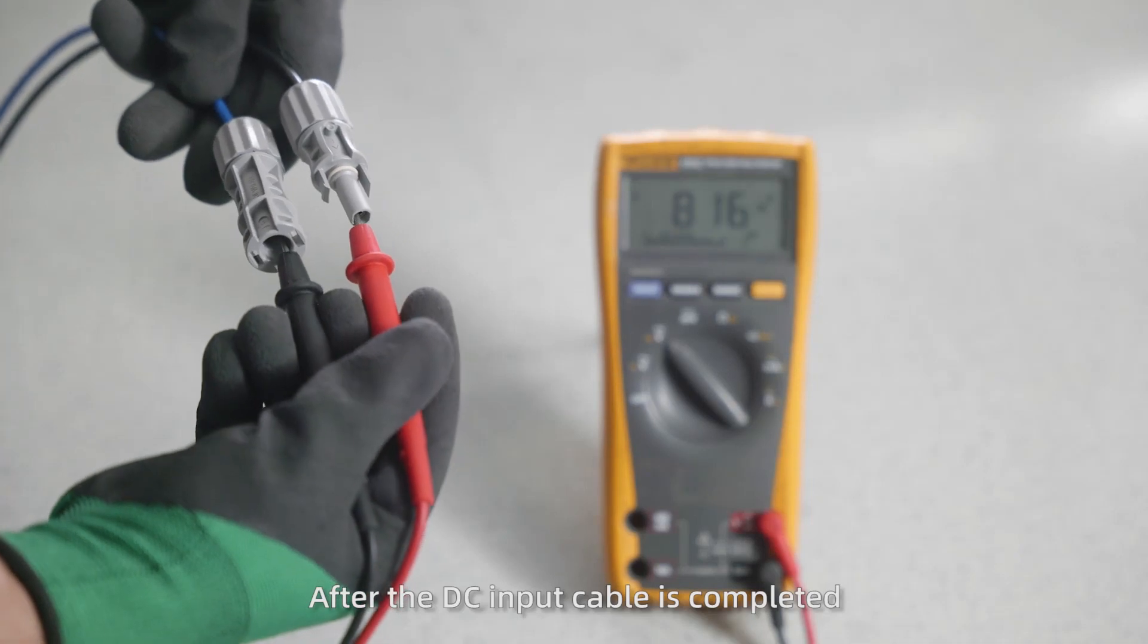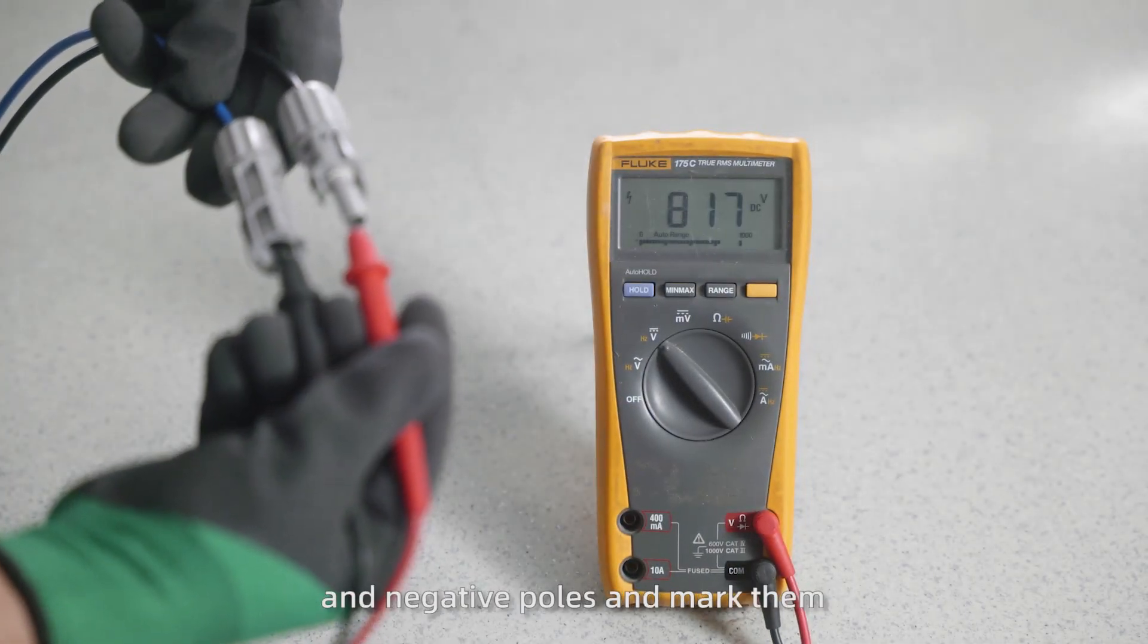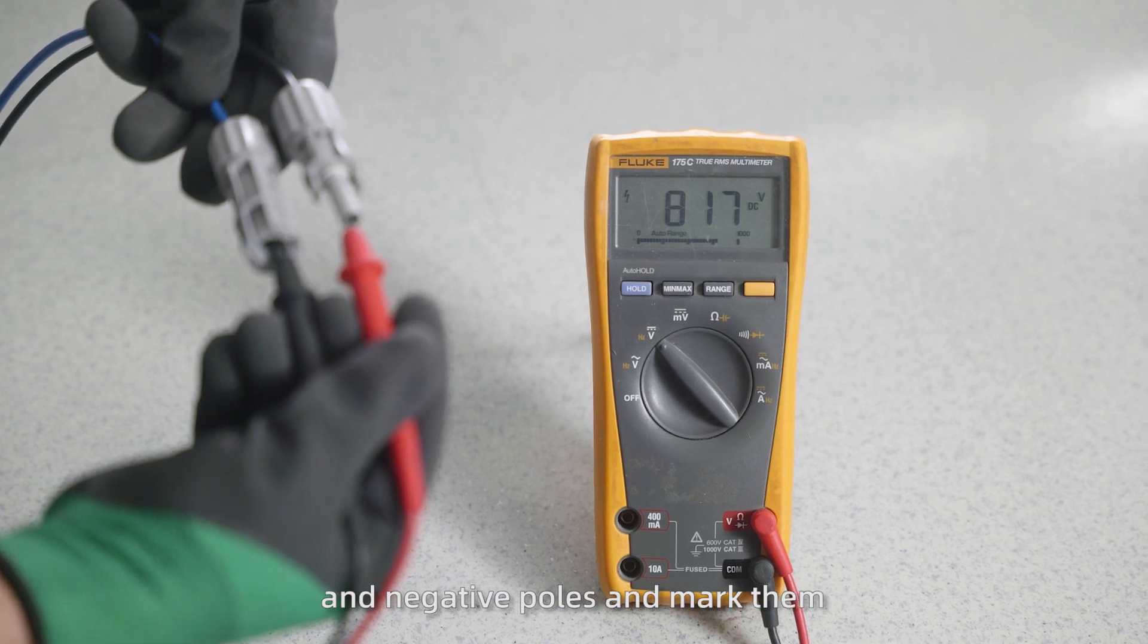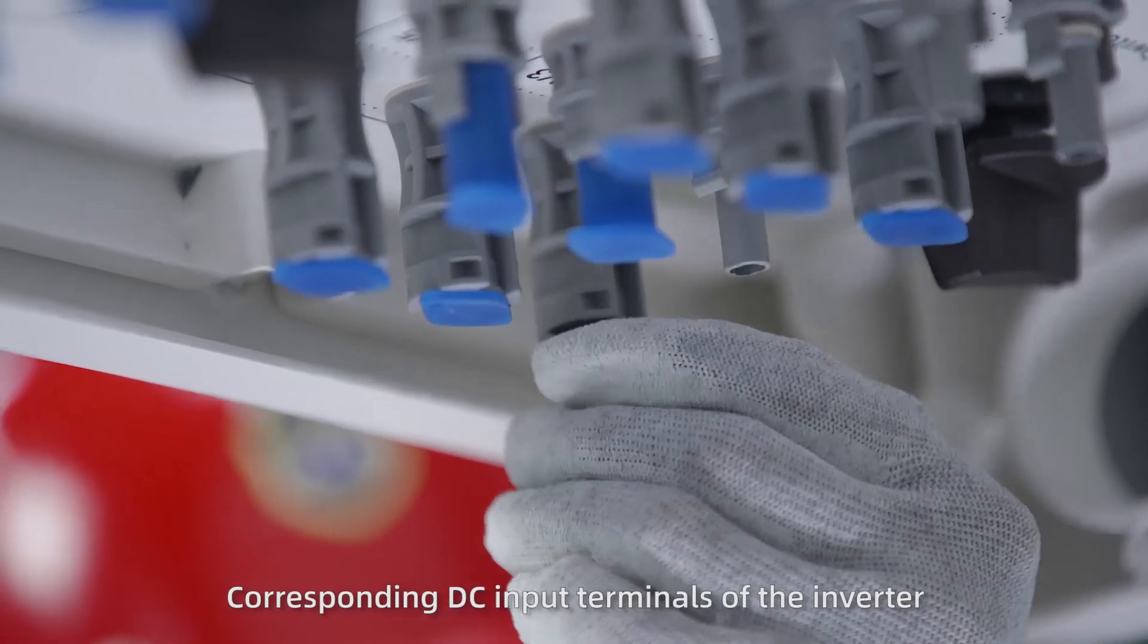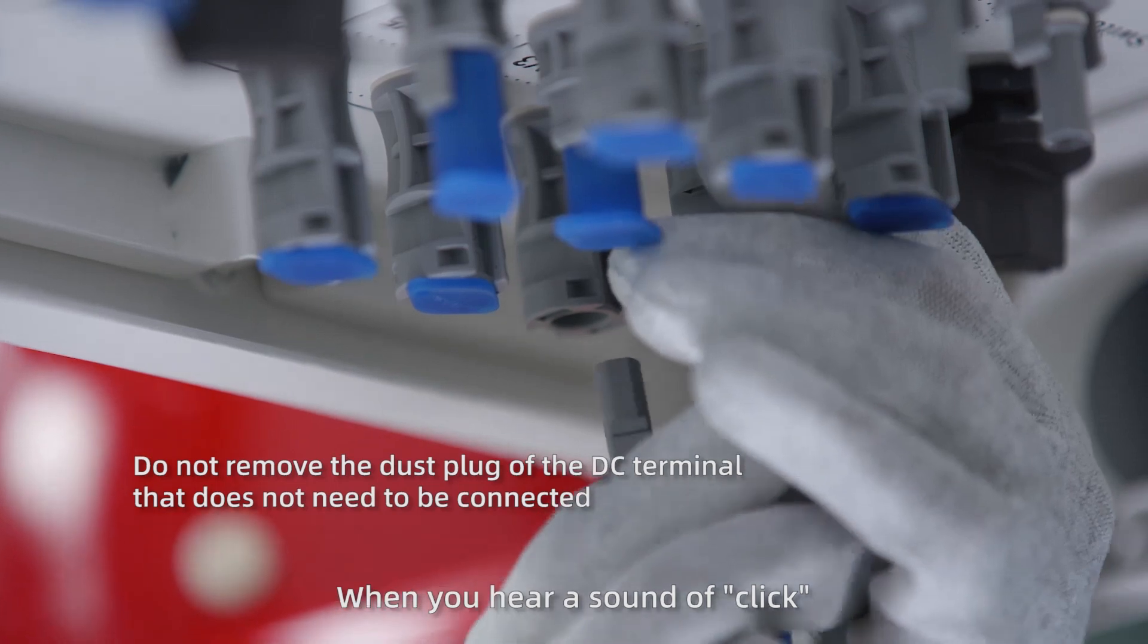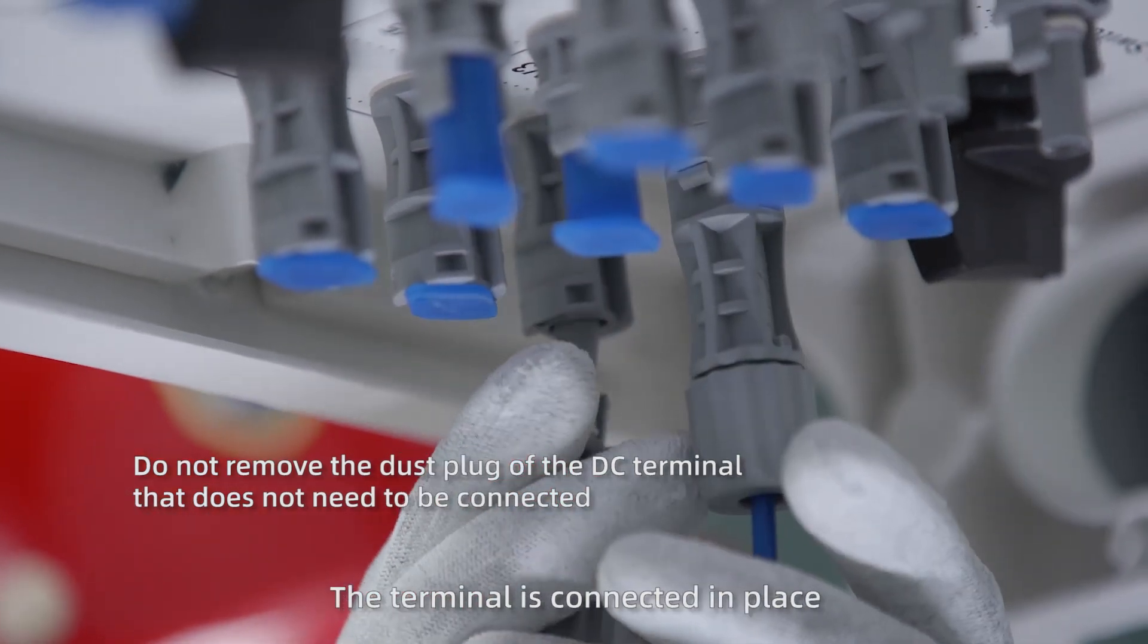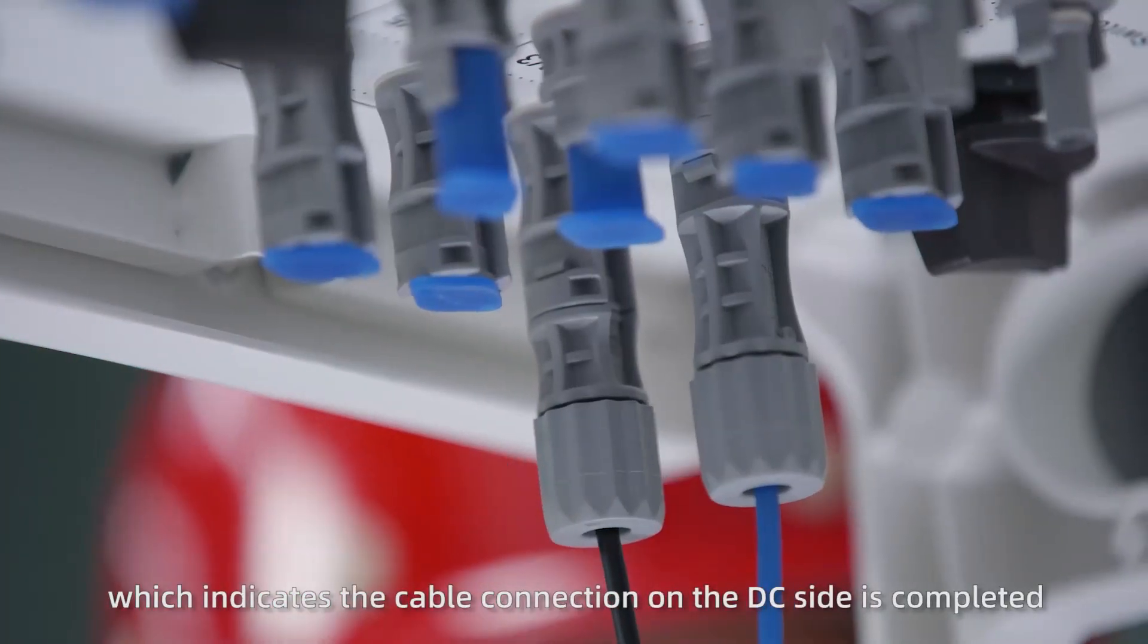After the DC input cable is completed, use a multimeter to determine the positive and negative poles and mark them. Then insert the positive and negative connectors into the corresponding DC input terminals of the inverter. When you hear a sound of click, the terminal is connected in place, which indicates the cable connection on the DC side is completed.